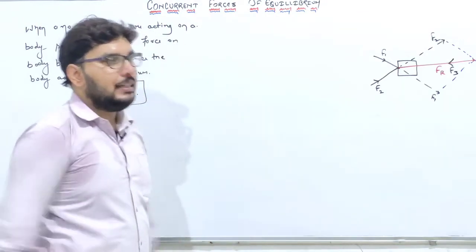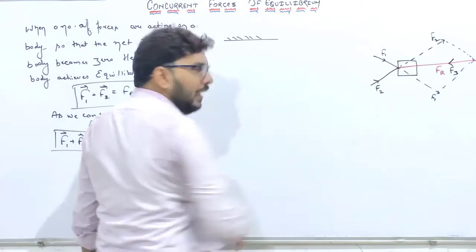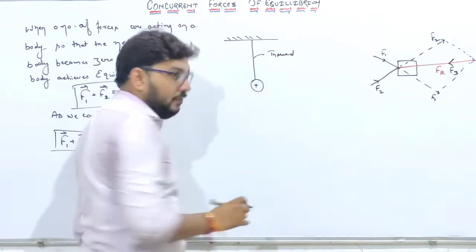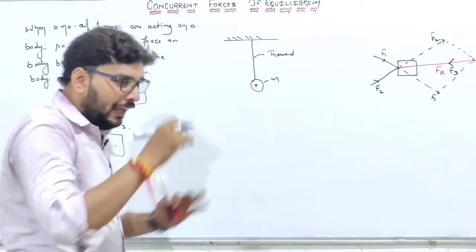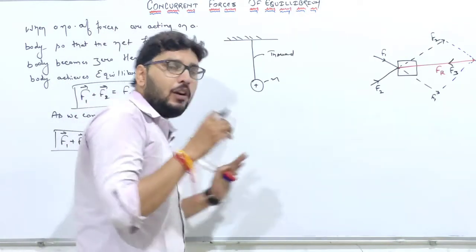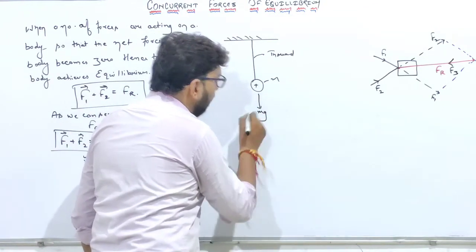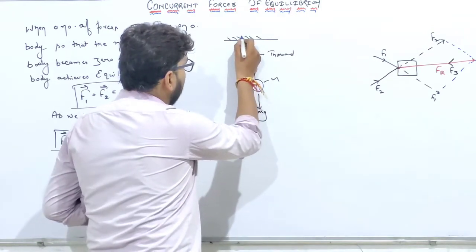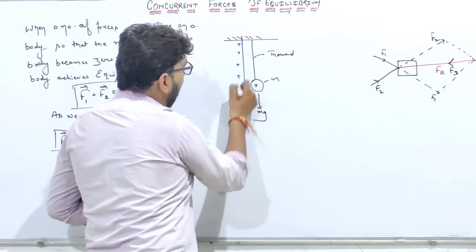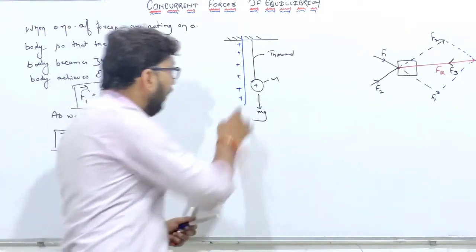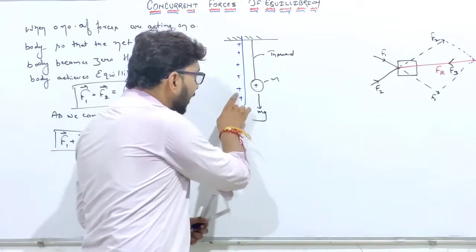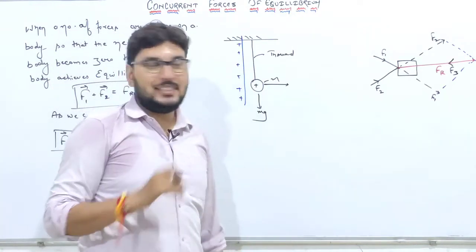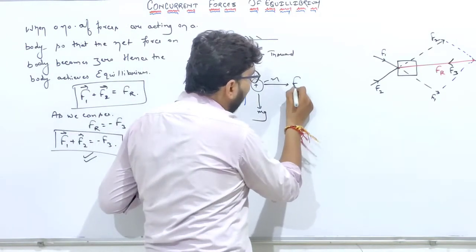Ab isse ek aur example ke through samjhte hain. Ek rigid support hai, jisse ek thread ke through koi charge jiska kuch mass M hai, use aapne hang kiya hua hai. Kyunki iska kuch mass hai, toh is body par gravitational force lag rahi hogi — woh neeche ki direction mein hogi: Mg. Uske bilkul bagal mein ek conducting plate rakh di jiske paas positive charge hai. Charge ke paas bhi positive charge hai, toh woh plate is charge ko horizontal direction mein repel karegi. Yeh electric force FE hogi.